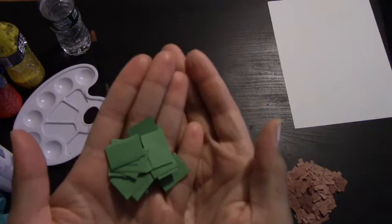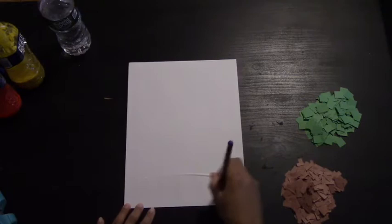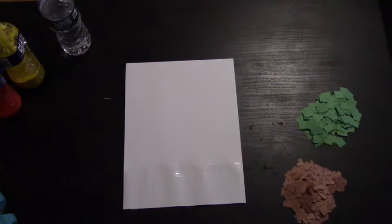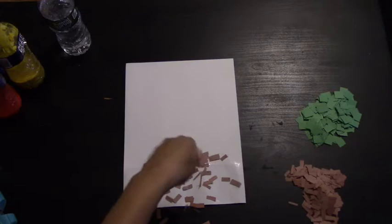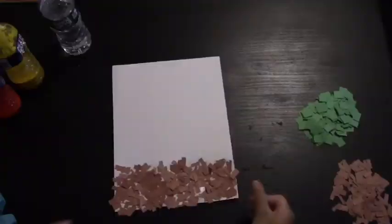Next we're going to take our white sheet of paper and begin gluing on the dirt and the stems. Take some glue and spread it across the bottom of your white paper, about a third from the bottom. Begin sprinkling on the brown pieces of paper. Make sure you completely fill in the bottom - this is going to be your dirt. When you're done, sprinkle the leftovers off and put them to the side.